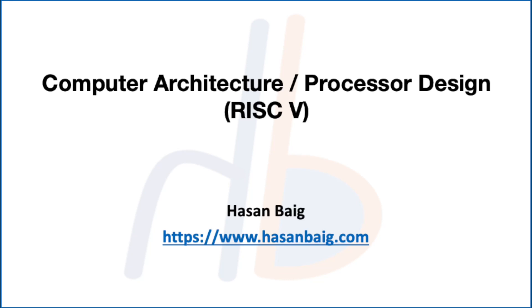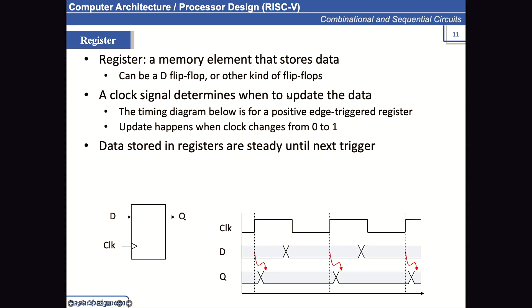A register is a memory element we've been discussing — it can be a D flip-flop or any other kind of flip-flop, but we assume we are using a D flip-flop. The clock signal determines when to update the data. In this timing diagram, when you see a shape like this, it means D is not a one-bit value — D is now a multiple-bit value. This is the standard way of representing multi-bit signals in any digital circuit simulation.